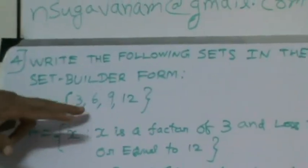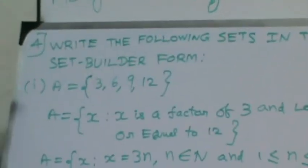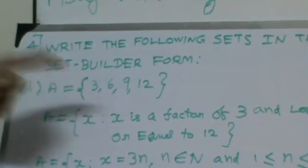Here in sum number 1, it has been A is equal to 3, 6, 9, 12. It is a finite set containing 4 elements.